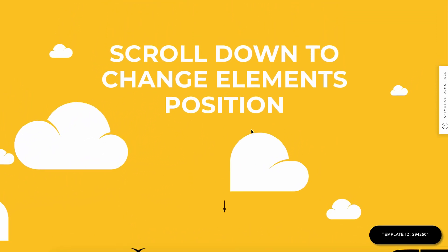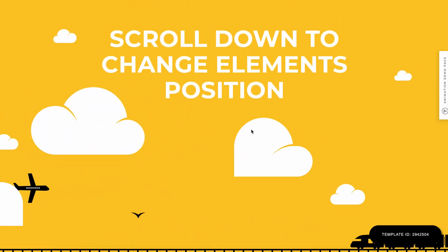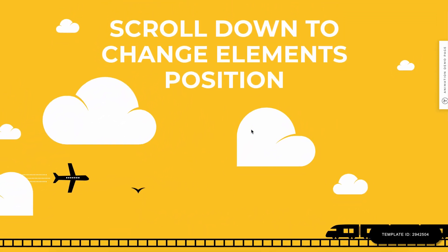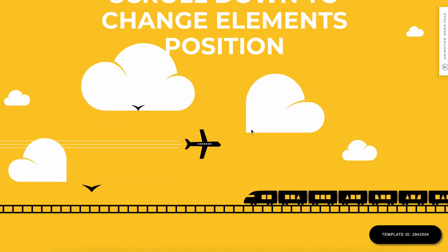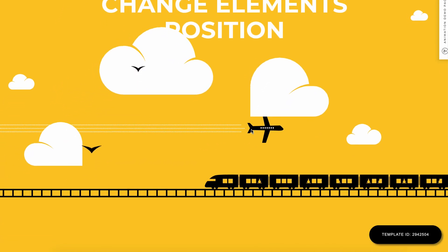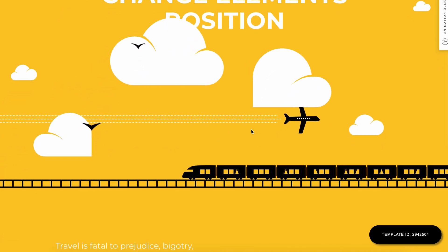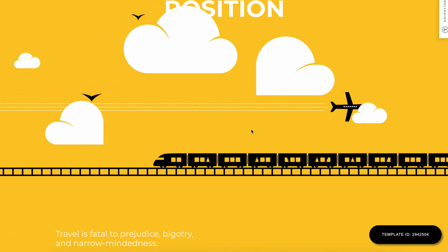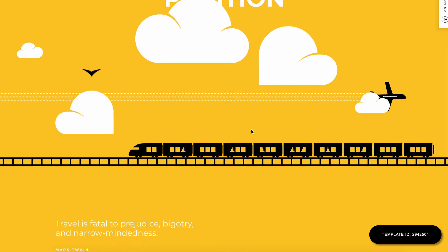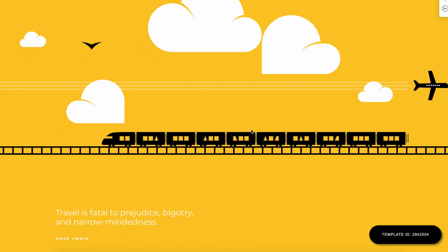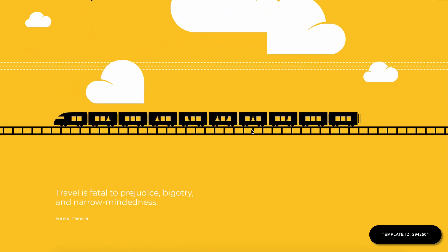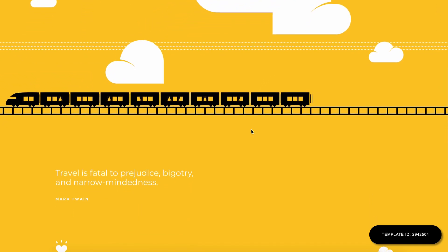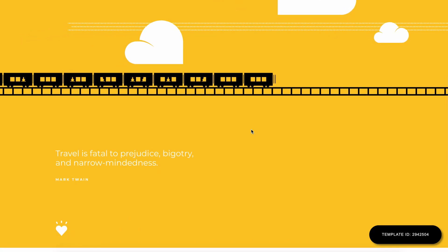On this page, elements move when you scroll. Multiple elements are in motion while you're scrolling down — clouds are floating, a plane is flying, and a train is moving. Let's figure out how they're all made.